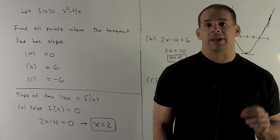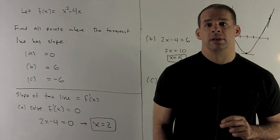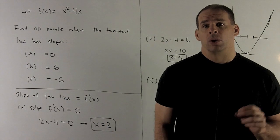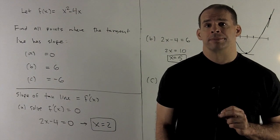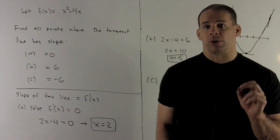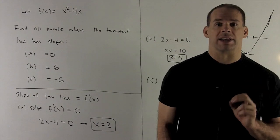Let f(x) = x² - 4x. Find all points x where the slope of the tangent line is equal to 0, 6, or -6.